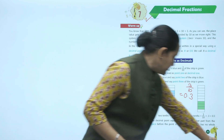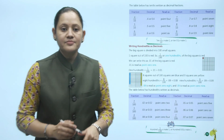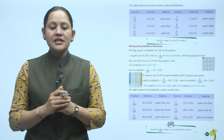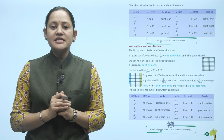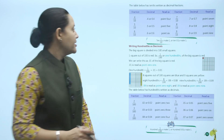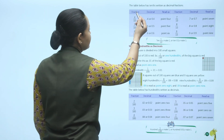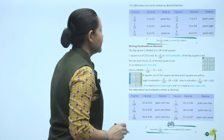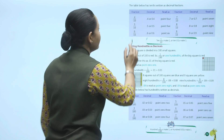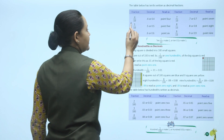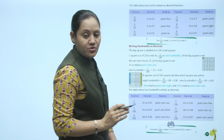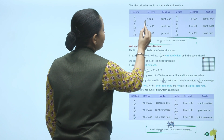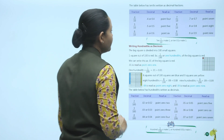Let's move ahead. Here a table is given. The table below has the tenths written as decimal fractions. The fractions given are 4 by 10, 5 by 10, and 6 by 10. To write in decimal: 10 means one zero, so from the right hand side, after one digit we place the decimal. So we write 0.4 or 0.4 for 4 by 10, and 0.5 for 5 by 10.